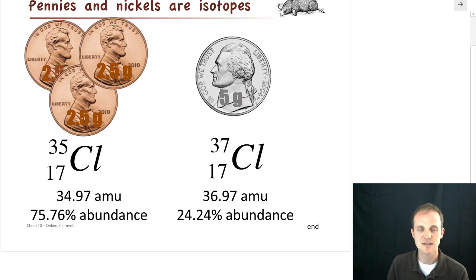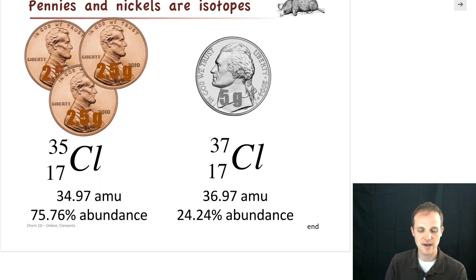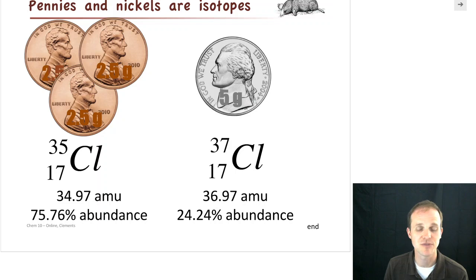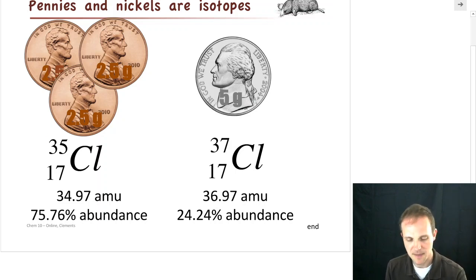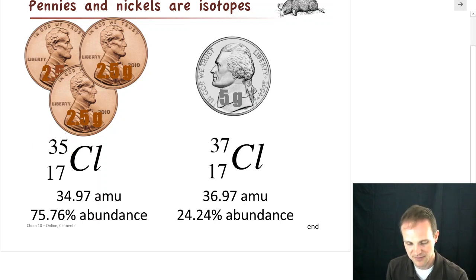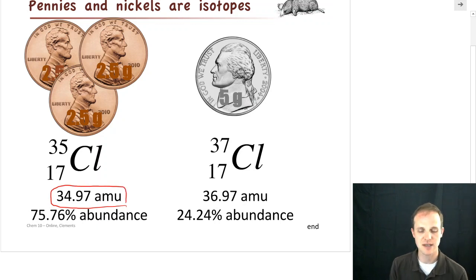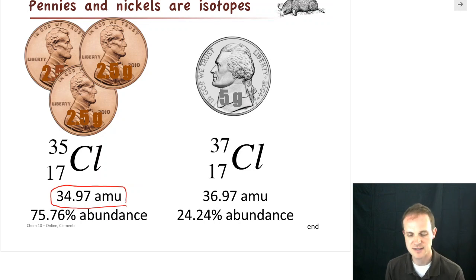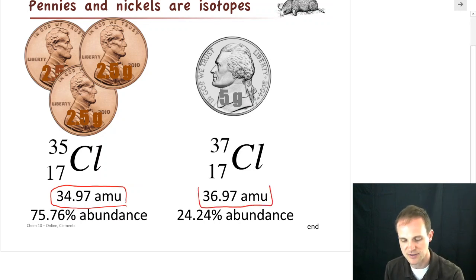We're going to talk about how these pennies and nickels are actually isotopes. The pennies might represent one isotope of chlorine, and the nickels represent a slightly heavier isotope of chlorine. Remember, the mass number is often the mass for small atoms, but for bigger atoms it's not. Chlorine-35 weighs 34.97 amu, and chlorine-37 weighs 36.97 amu.